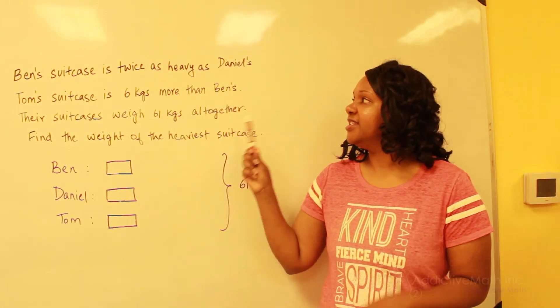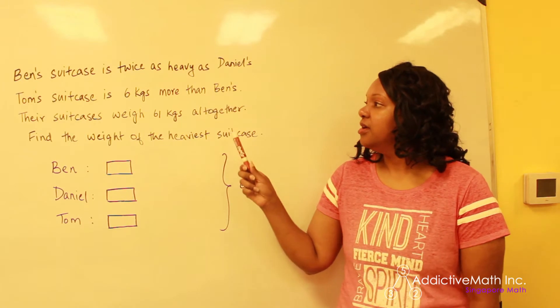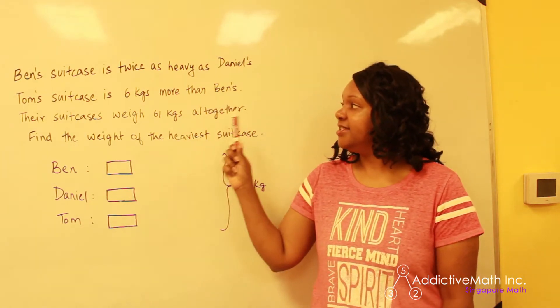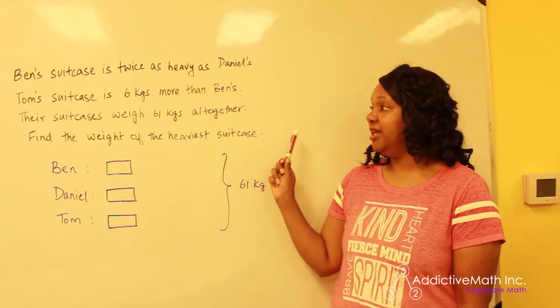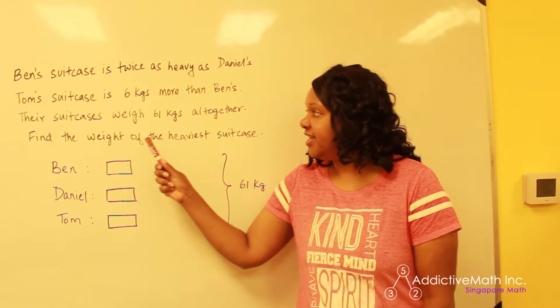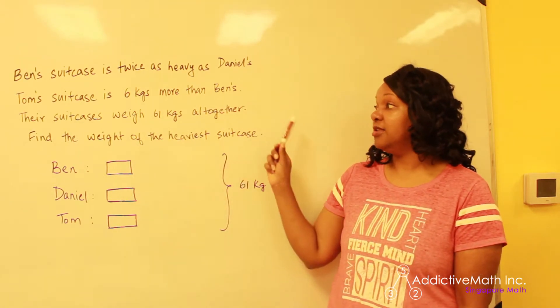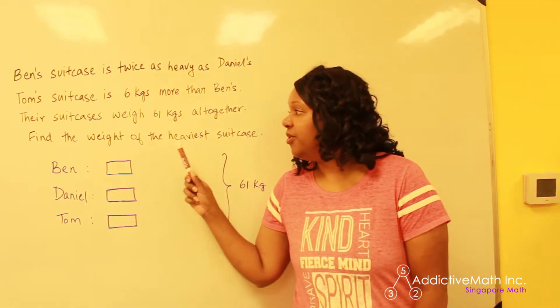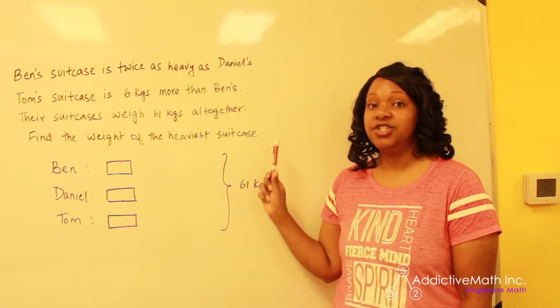Ben's suitcase is twice as heavy as Daniel's. Tom's suitcase is six kilograms more than Ben's. Their suitcases weigh 61 kilograms altogether. Find the weight of the heaviest suitcase.